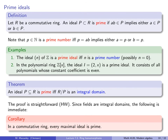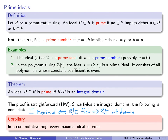Since fields are integral domains, the following corollary is immediate: in a commutative ring, every maximal ideal is prime. Being maximal is a stronger condition. Proof: if I is a maximal ideal, that is equivalent to R/I being a field; and if R/I is a field, it is automatically an integral domain; and by the theorem, R/I being an integral domain is equivalent to I being prime. So every maximal ideal is prime.